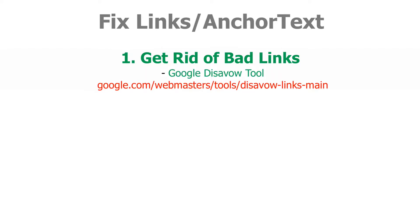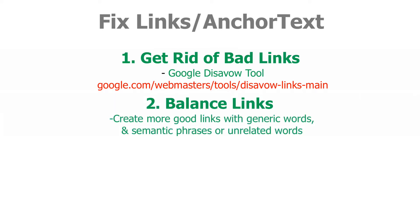In that case, you can use the Google disavow tool to find bad links and to request their removal — but that's only if there are bad links. To balance your links, which are just over-optimization, you can create more good links that are not optimized.